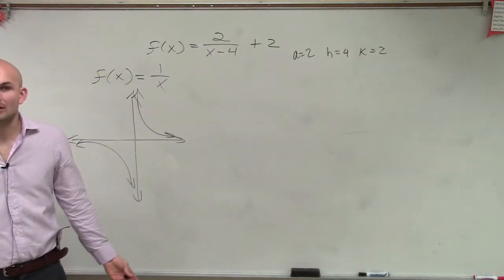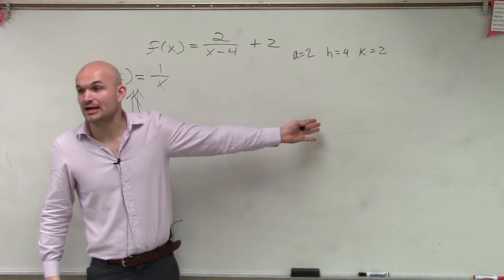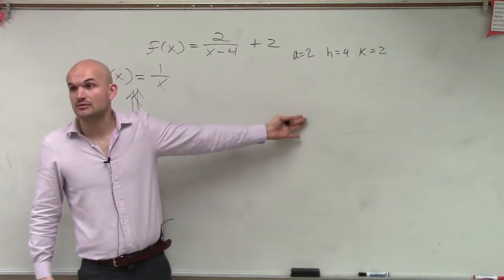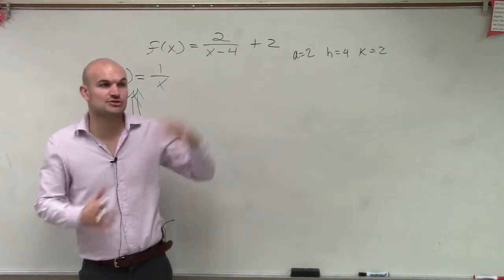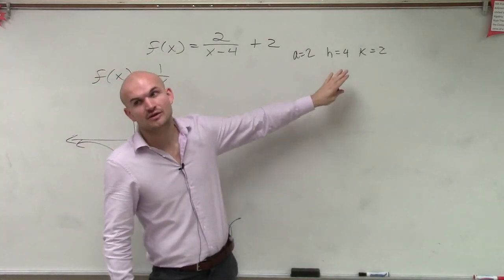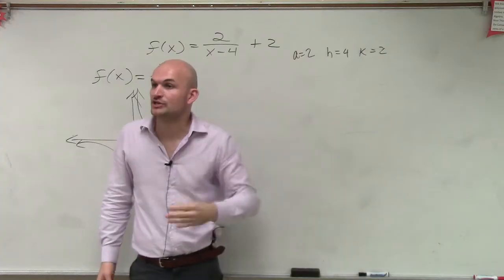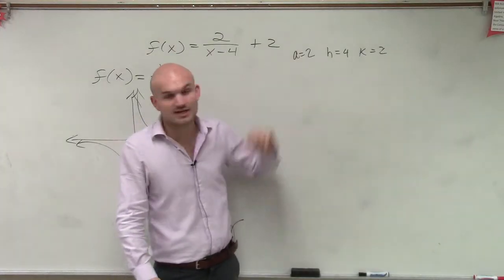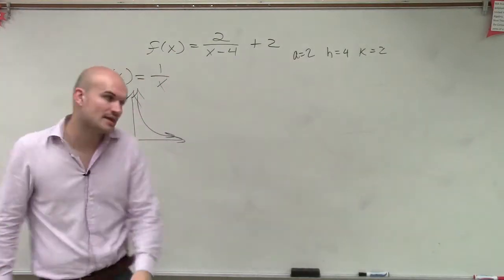So what does that tell us? Well, a is going to tell us we're going to have a stretch. Or I'm sorry, a compression or it's going to be stretched vertically, compressed horizontally. Either way, we'll show you guys how to evaluate for that. Then the next thing, h is going to tell us we're going to shift right 4, and k tells us we're going to shift up 2.